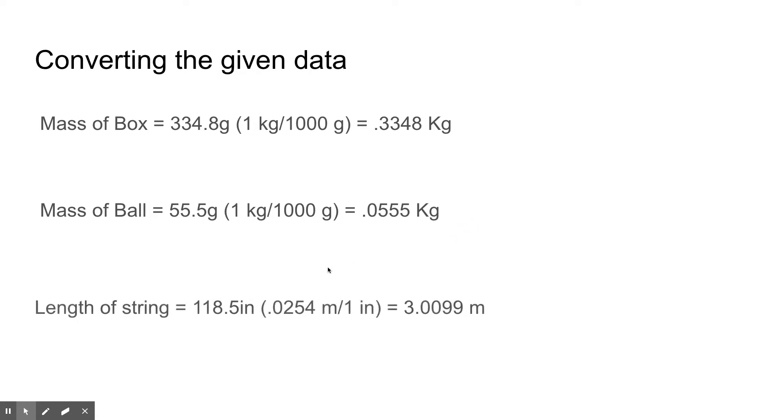So we start by converting the data that we got into workable numbers. Starting with the mass of the box, the scale read 334.8 grams and we convert that to kilograms and we get 0.3348 kilograms. Same with the ball, we were given 55.8 grams and we convert it to 0.0555 kilograms. And the length of the string was in inches at 118.5 inches. When you convert that to meters we get 3.099 meters.